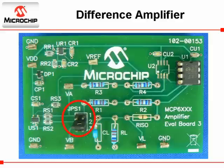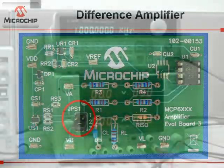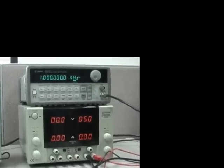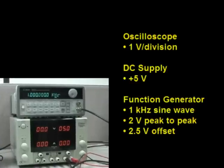There is one jumper on the evaluation board. Jumper 1 should be placed in position 2. We set the oscilloscope at 1 volt per division. The DC power supply is plus 5 volts. The output of the function generator is set as a sine wave with peak-to-peak voltage equal to 2 volts, offset equal to 2.5 volts, and a sine wave frequency of 1 kilohertz.